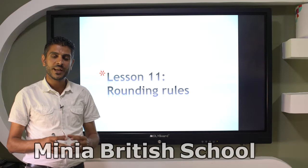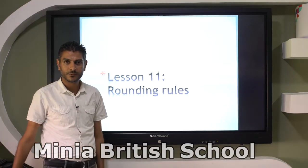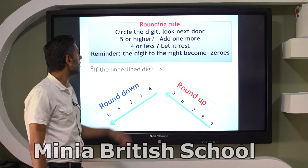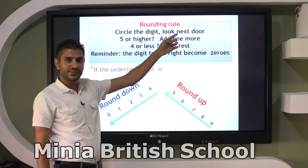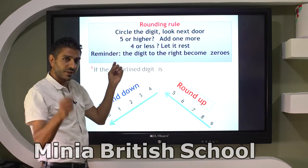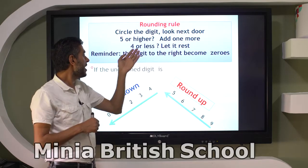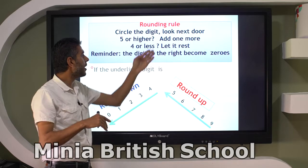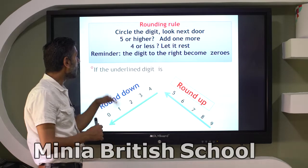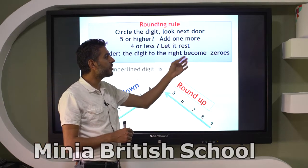Hello Grid 4, now let's start Lesson 11: Rounding Rules. The rounding rule is: circle the digit, look next door at the next digit. If this digit is 5 or more, add 1. If 4 or less, leave it as it is. Remember that the digits to the right become zeros.